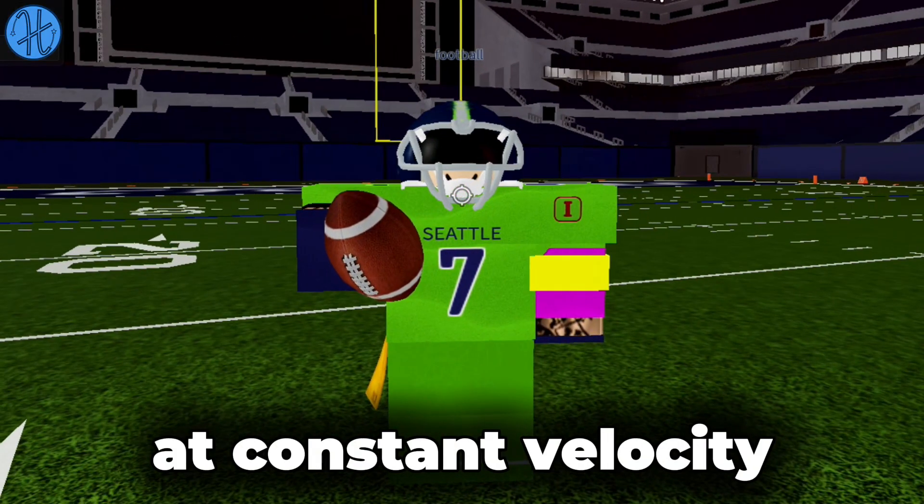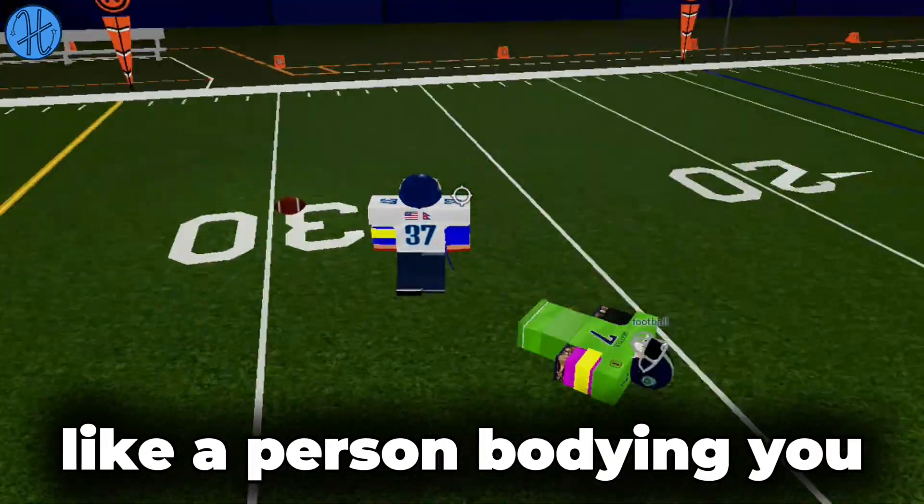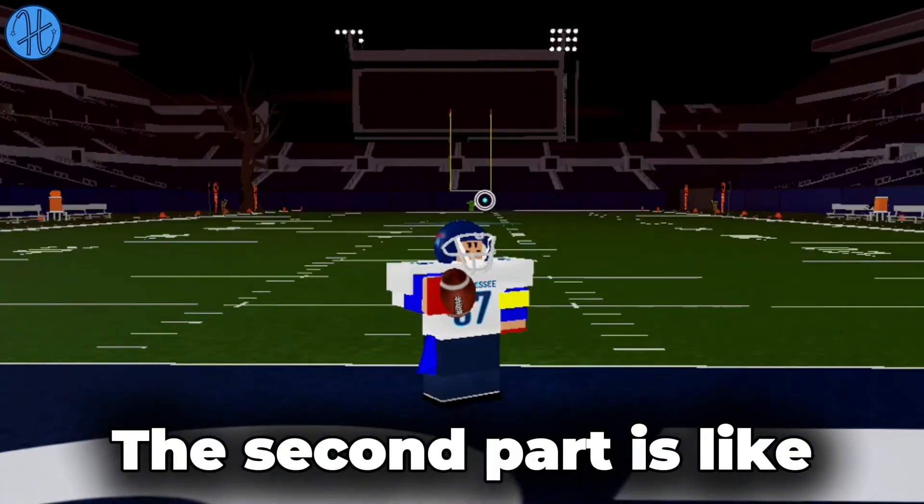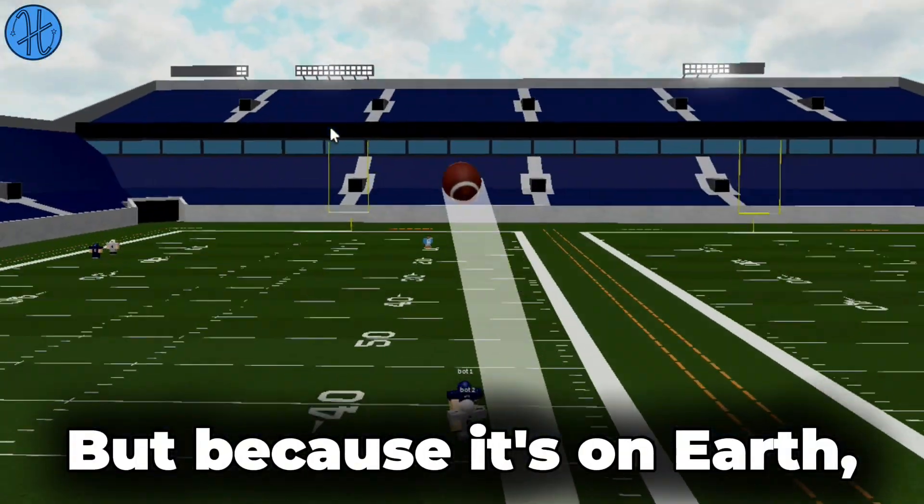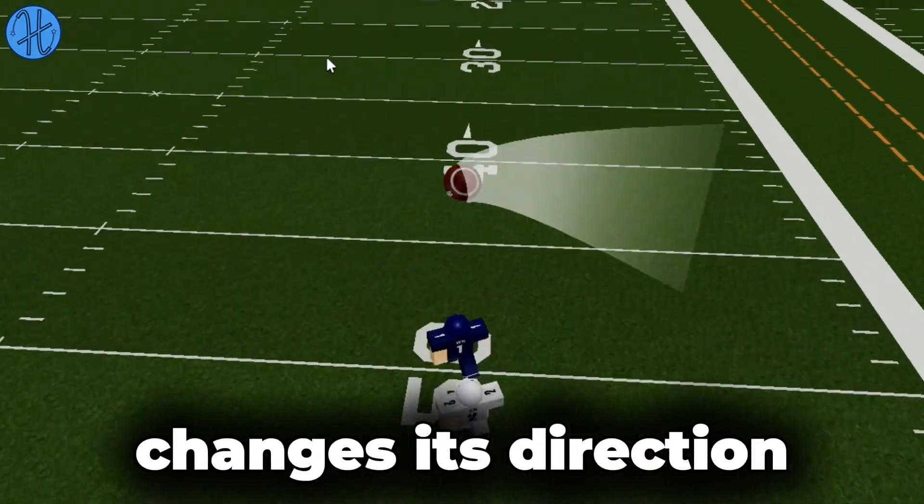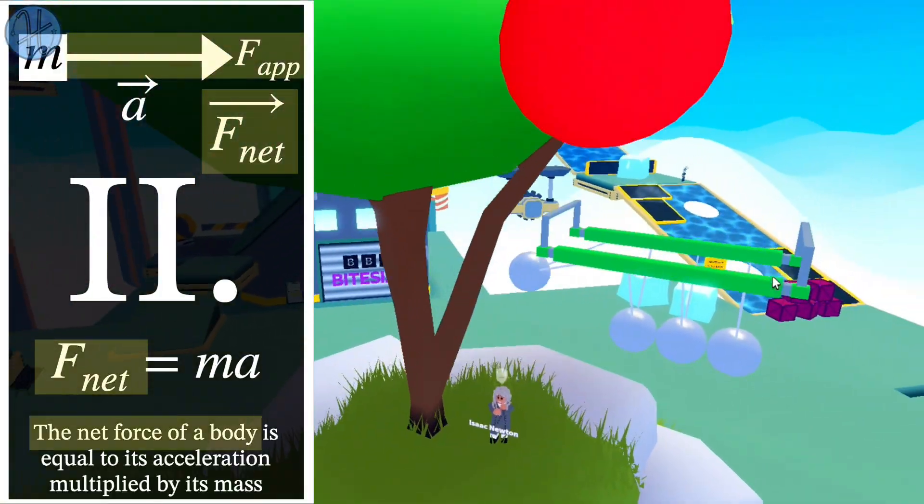For example, if you're standing still at constant velocity, you're not gonna move unless some other force like a person bumping you comes in. If you throw a ball, it should move forever in a straight line, but because it's on Earth, friction and gravity change its direction and slow it down in time.